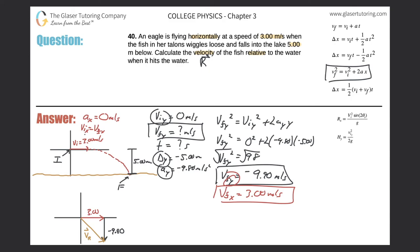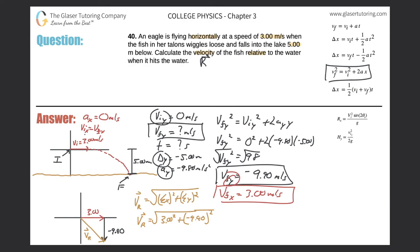To find the resultant, we use the Pythagorean theorem — or equivalently: v_resultant = √(v_x² + v_y²) = √(3.00² + (−9.90)²). Calculating: √(9 + 98.01) = √107.01 ≈ 10.3 meters per second. That is the resultant velocity — the answer to the question.